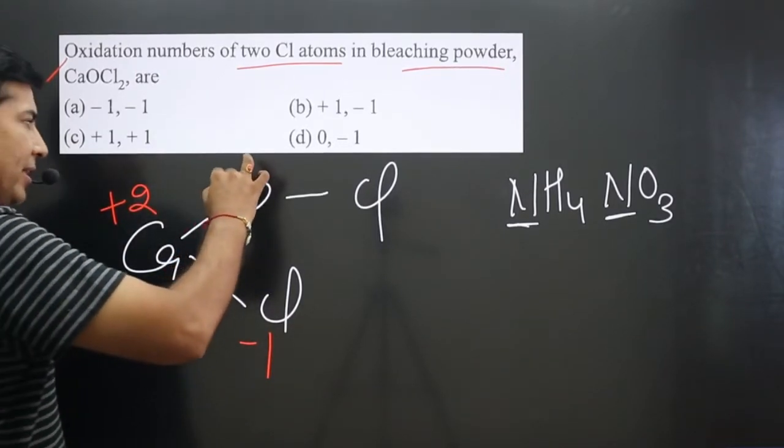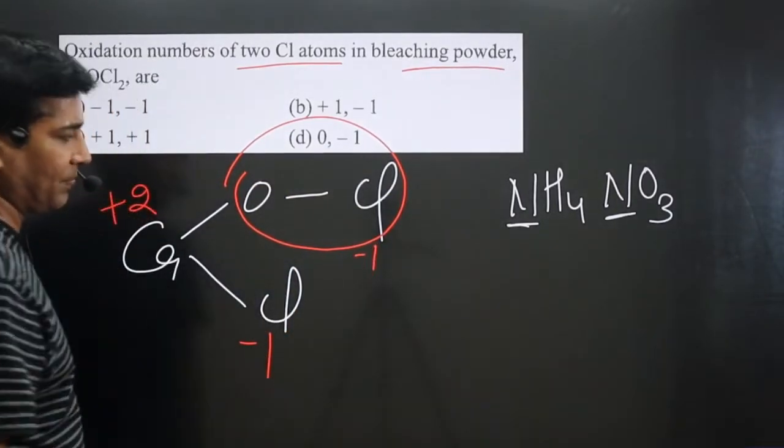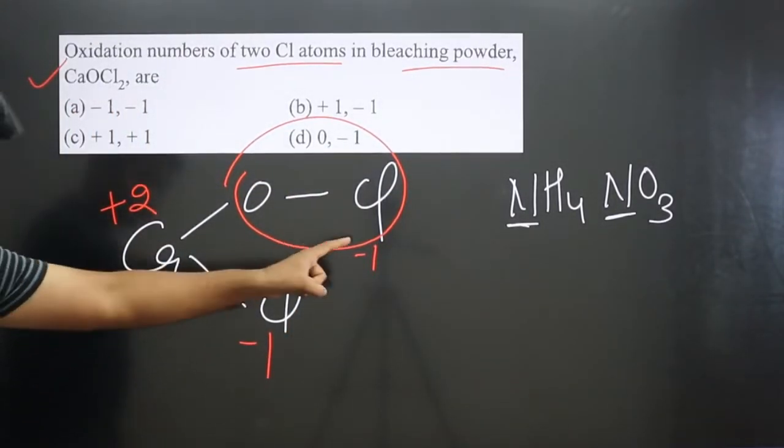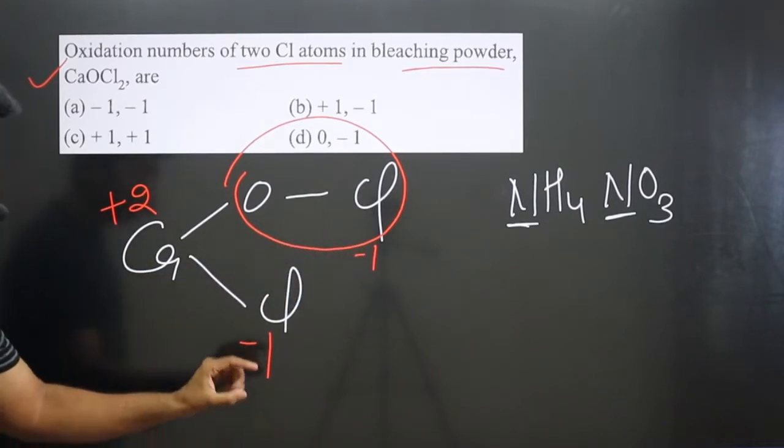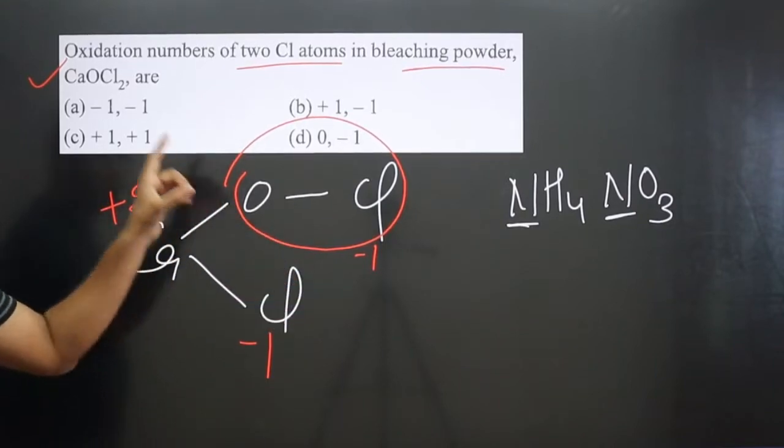This entire portion is supposed to have minus one charge. Then minus one minus one is equal to minus two. This is total minus two. This is total plus two. Plus two minus two is equal to neutral.